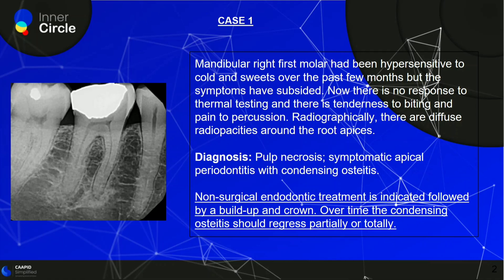Anytime we have an infection which has reached the periapical areas, or even when it is an irreversible pulpitis, we always go ahead with endodontic treatment followed by a restoration. A restoration cannot be assessed by the radiograph alone — we have to look at it clinically to assess the amount of tooth structure remaining, the biologic width, and the ferrule. After all clinical examinations, we can decide whether we need a crown, a post-core, or anything else.